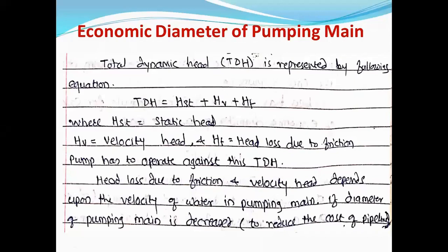Next is the economic diameter of pumping main. The pumping main is the main pipeline which carries water from the source to the water treatment plant, where water flows under pressure — the source is at a lower level and the treatment plant is at a higher level, so we require a pump. We are going to find out what should be the economical diameter of this pumping main.